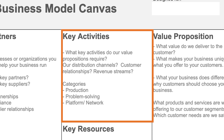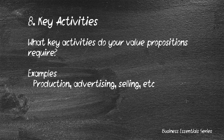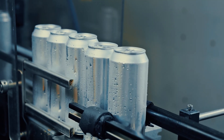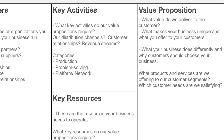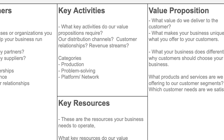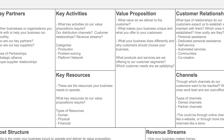Key activities refers to the key things involved in the delivery of your products and services — what you do in the everyday delivery of your value proposition. If you make a physical product, that could involve production; if you sell a physical product, it could be procurement. Put in all of the different key activities you need to do in order to deliver your value proposition.